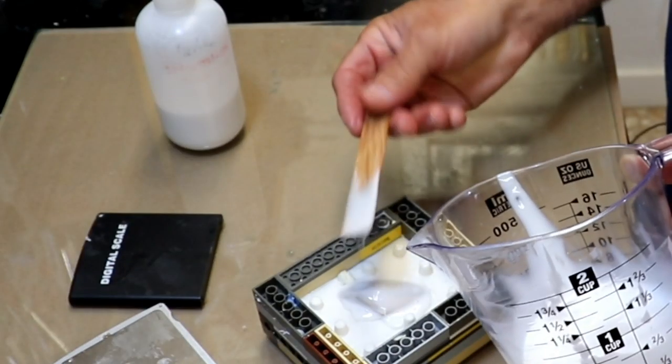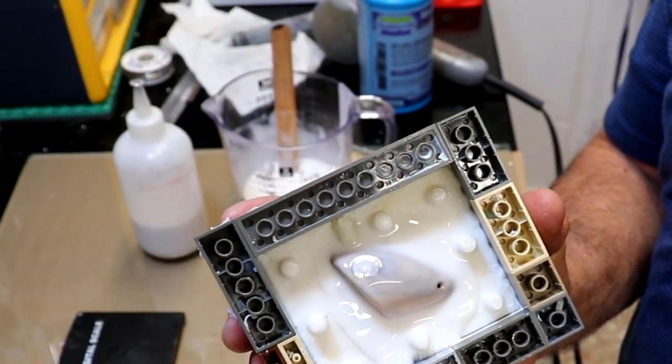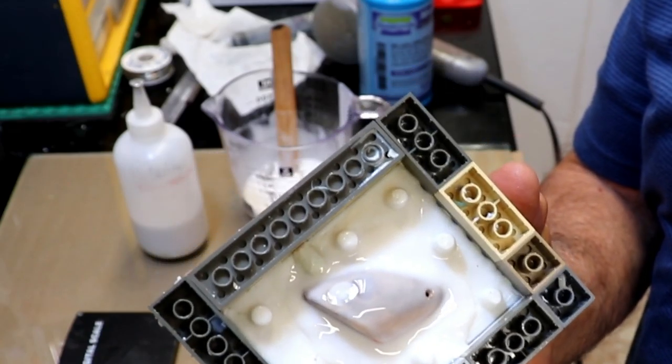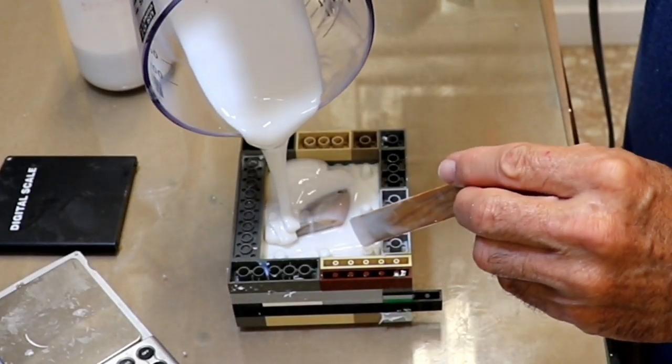And from here it's just mixing and then that same technique that I used by putting a very thin layer on the body of the lure. And there you go bubble free.